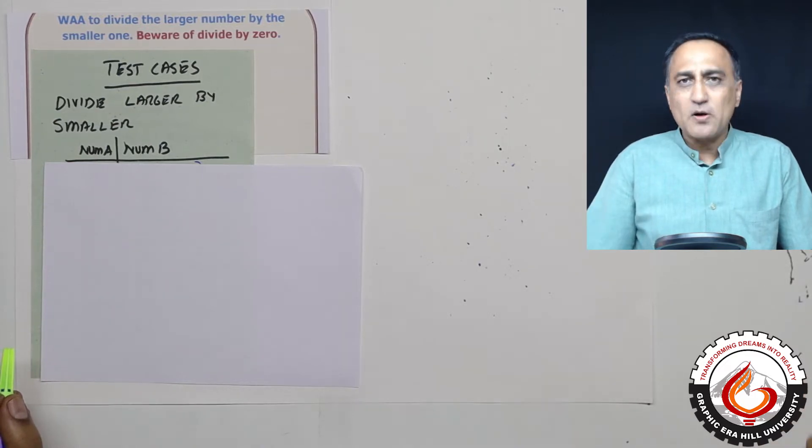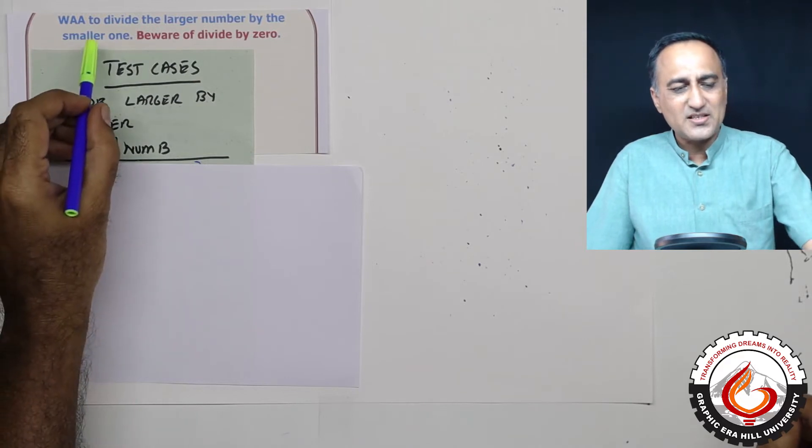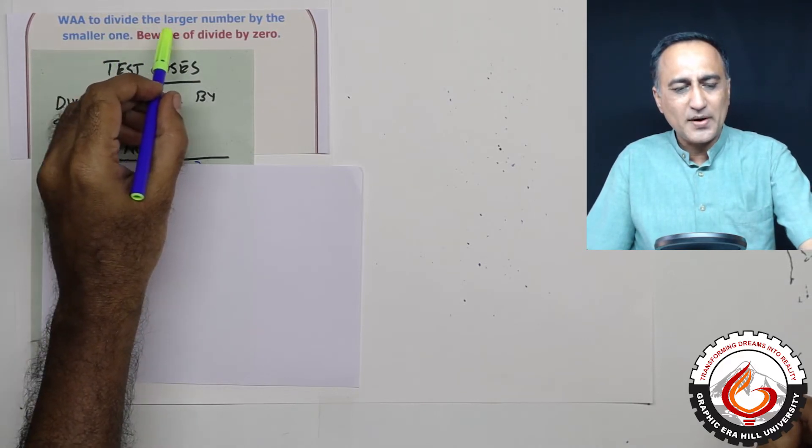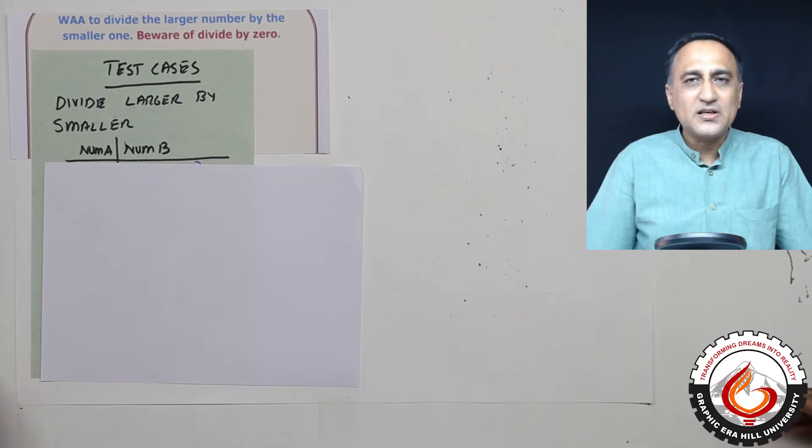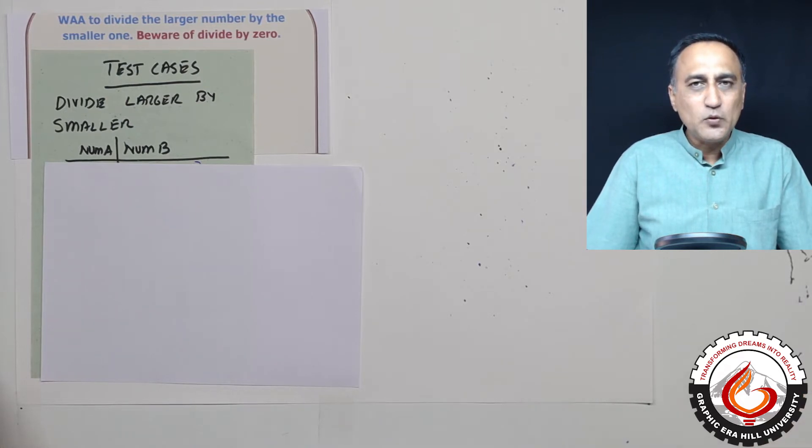So what this problem is asking is, it's asking us to write the algorithm to divide the larger number by the smaller one. If it is simply 5 and 10, it's easy because 10 by 5 is 5. The problem comes when zeros come into picture. So whenever you're solving a problem by an algorithm, try to think of all the possible input or data values that a user can give.